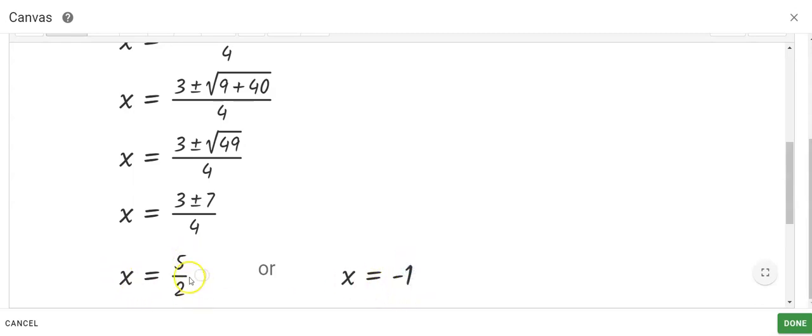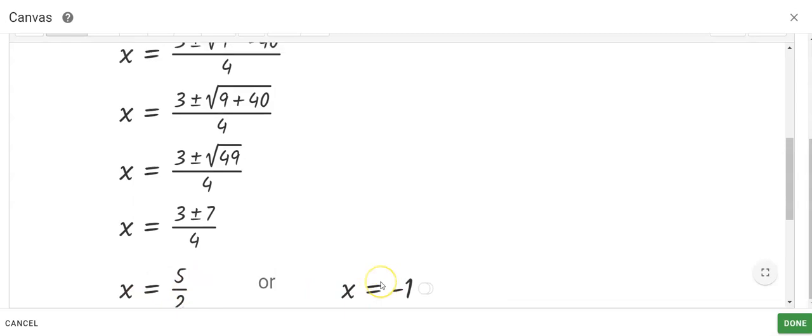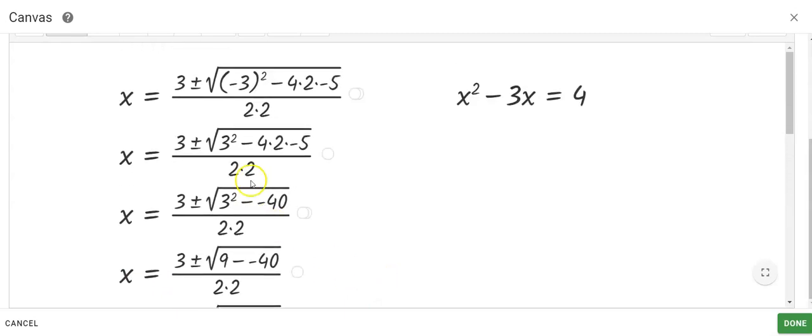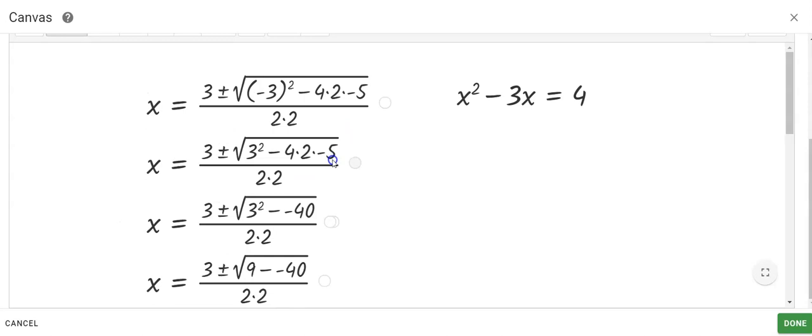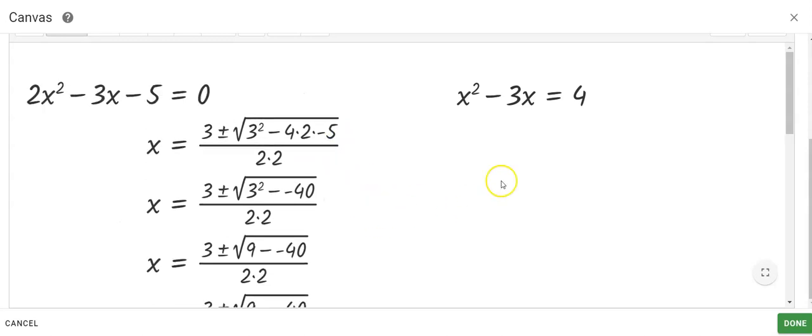So I have two solutions, five halves and negative one for this first one. All my work is showing. You could drag this up if you want to cover up some of your steps.